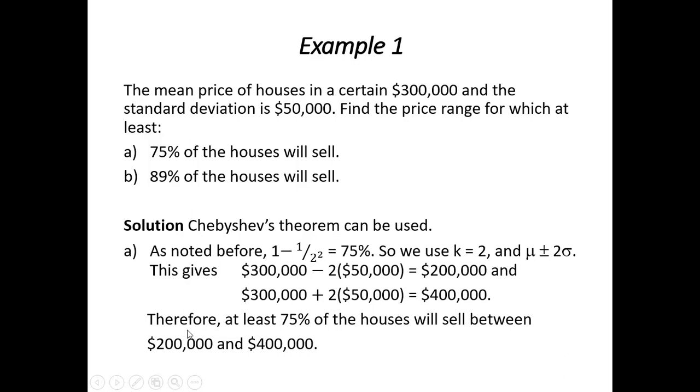To summarize, we know that at least 75% of the houses will sell between $200,000 and $400,000 in this neighborhood that we're interested in.